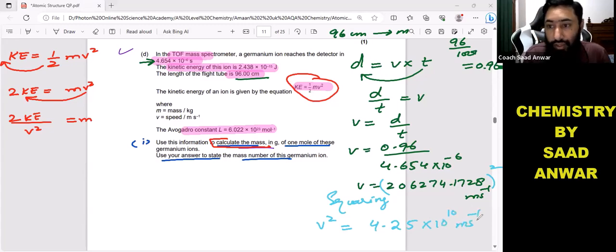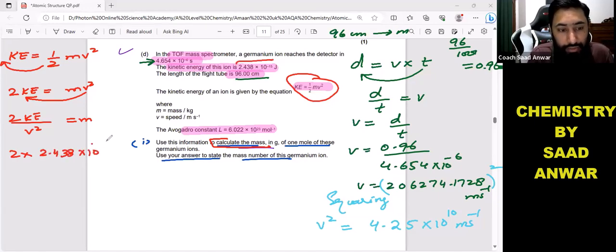So kinetic energy is this value: 2.438 times 10 raised to power minus 15. V squared is 4.25 times 10 raised to power 10. That will help me to find mass.